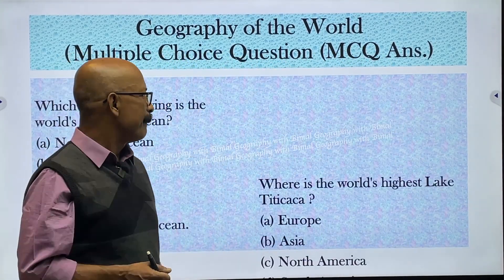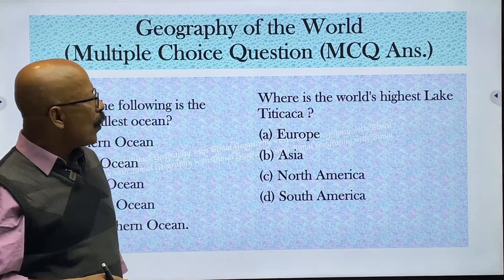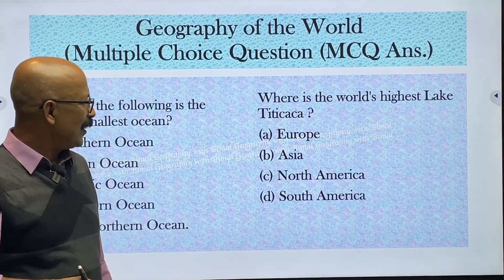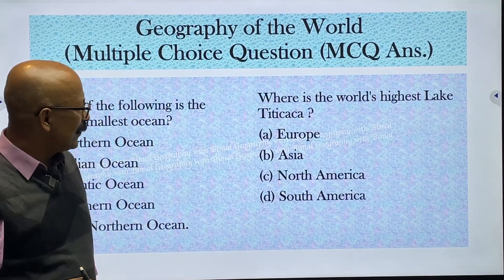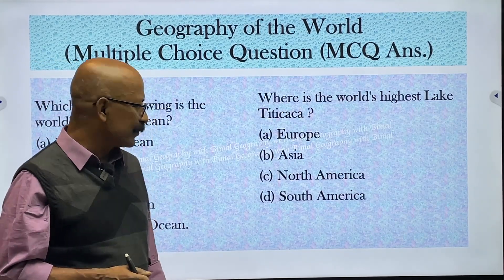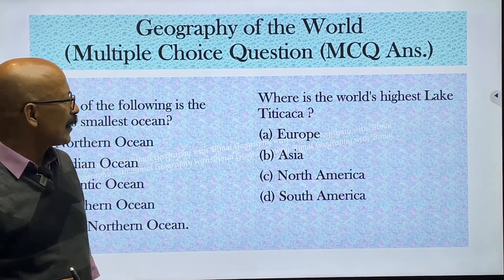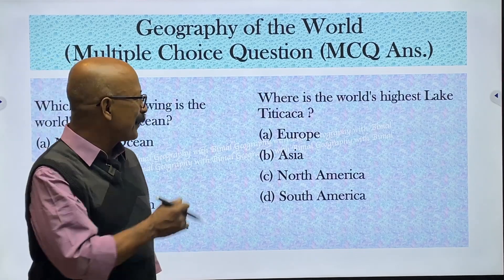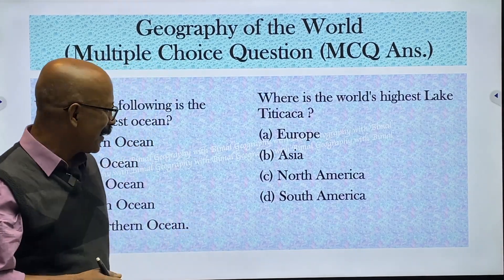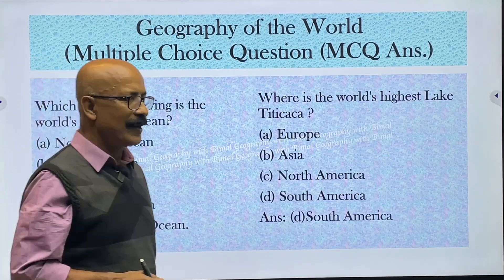Where is the world's highest lake, Titicaca? Options are Europe, Asia, North America, or South America. Most likely it is in South America. Titicaca — a very beautiful name — and yes, the correct answer is South America.